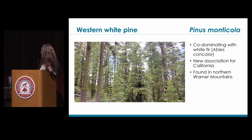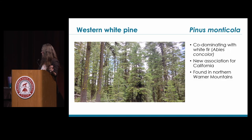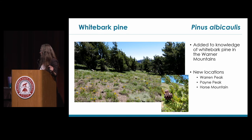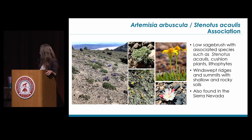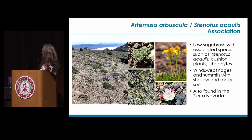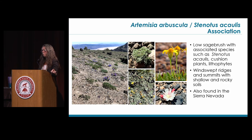We have identified stands of western white pine, commonly found in the northern Warner Mountains. This alliance is known from the Sierra Nevada; however, in the Warner Mountains it's found co-dominating with white fir rather than red fir, since there is no red fir in the Warner Mountains — a unique combination and a new association for California's classification. Another important vegetation type is whitebark pine stands — a known alliance, but we have three new locations for this sensitive natural community. On windswept ridges and summits, we find a low sagebrush association characterized by shallow, rocky soils and associated species such as Stenotus acaulis, typically occurring with Phlox stragglii and Draba densifolia. This vegetation type is known from the Sierra Nevada, but we may have a new association within the Warner Mountains.